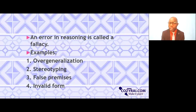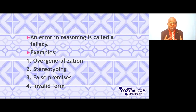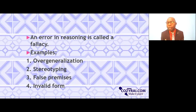So, we've come to see that in deductive reasoning, the syllogism or argument comprises three statements: the major premise, the minor or particular premise, and the conclusion. For the conclusion to be absolutely true, the major and minor premises should agree with each other. We've also seen that errors in reasoning are called fallacies — examples include overgeneralization, stereotyping, false premises, and invalid form. I hope you have learned something about deductive reasoning. Wishing you the very best — have a nice night.